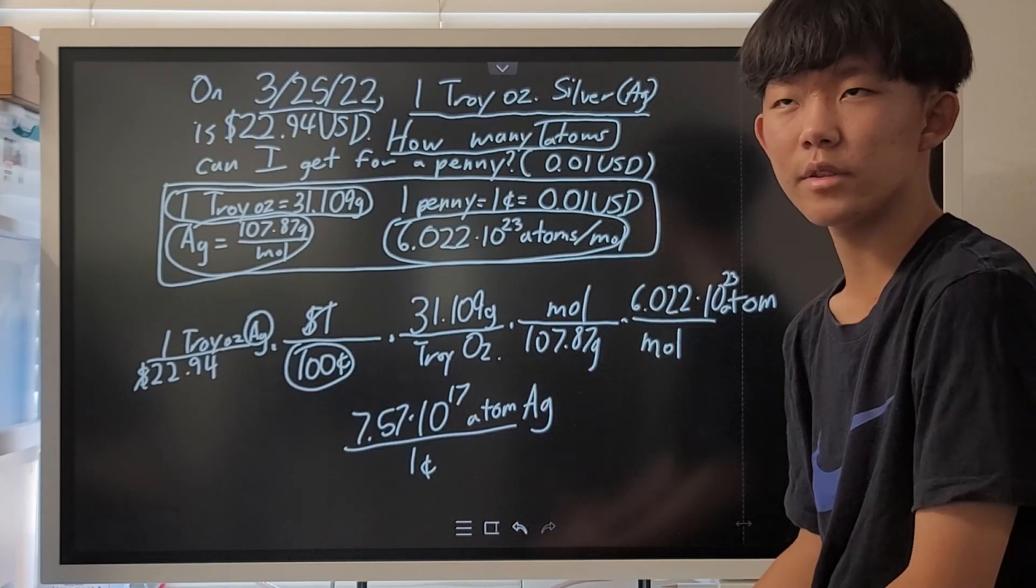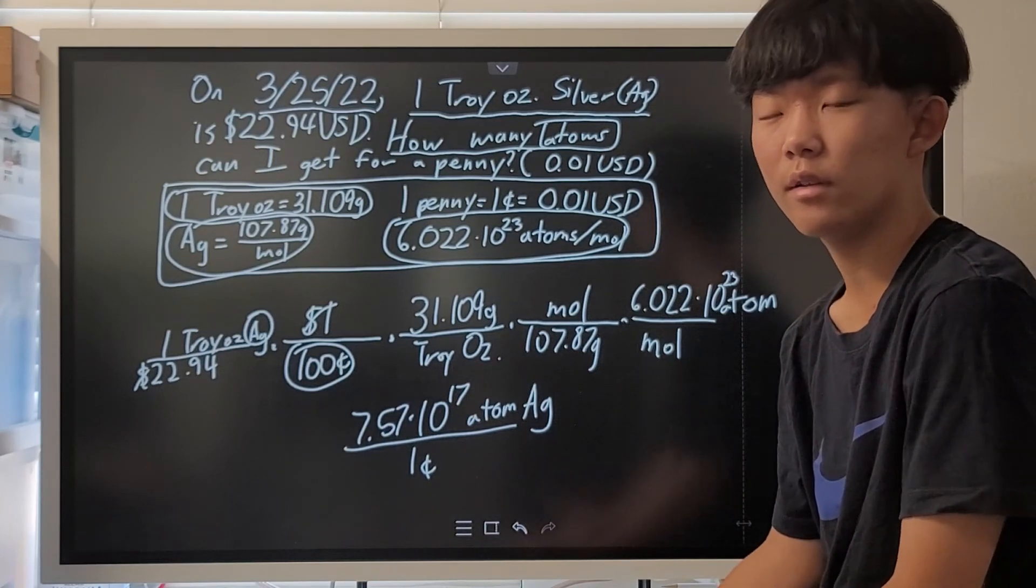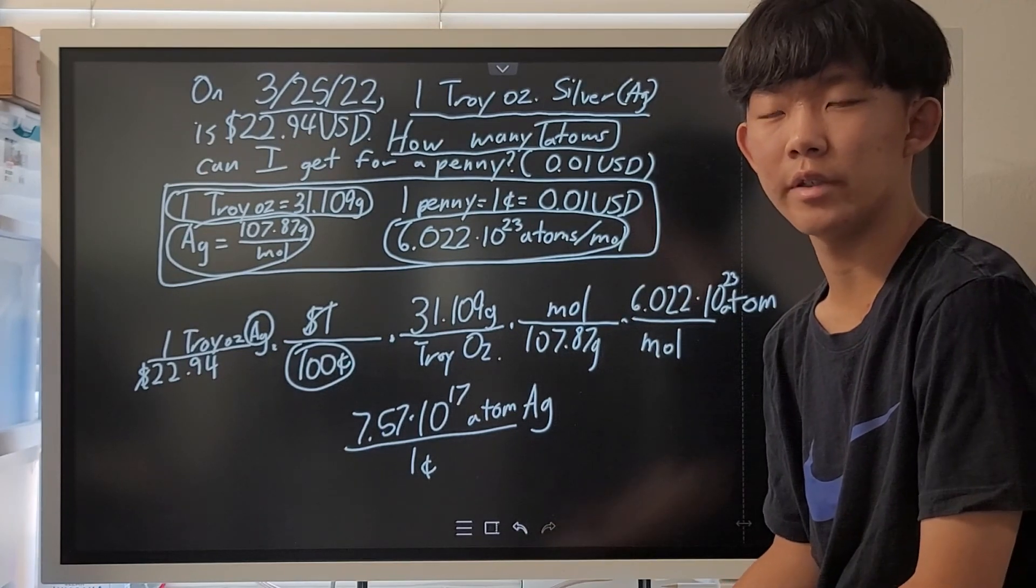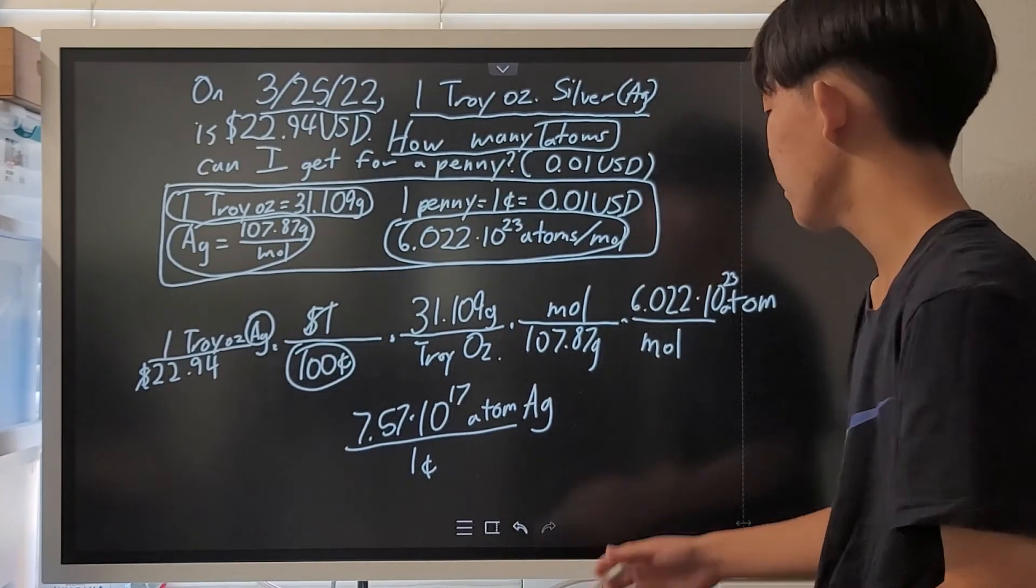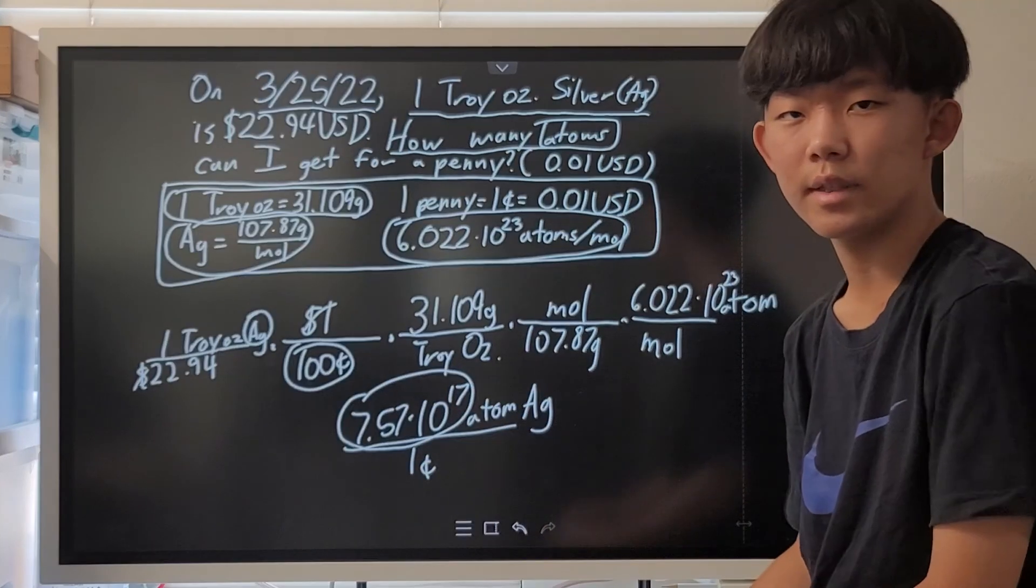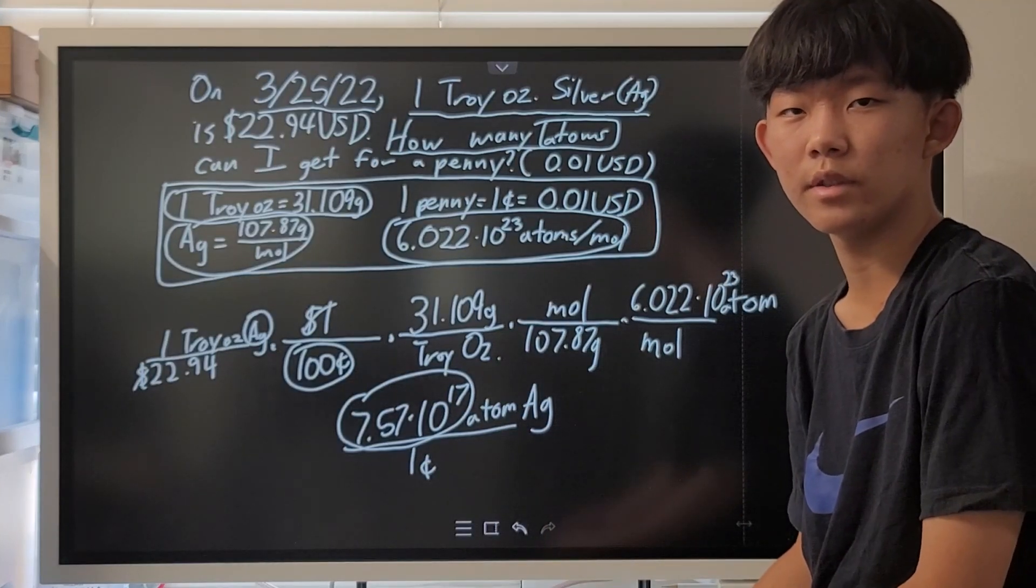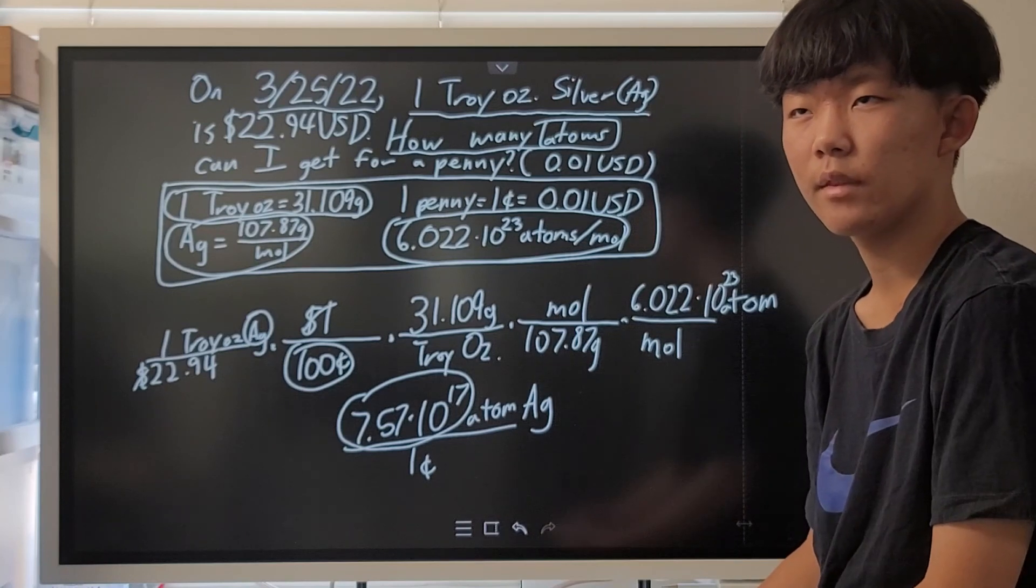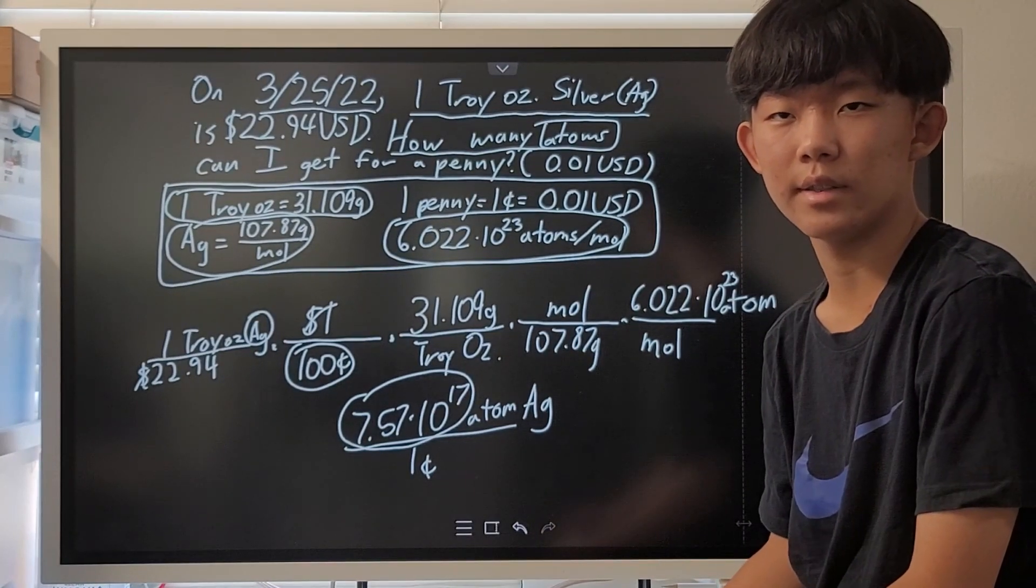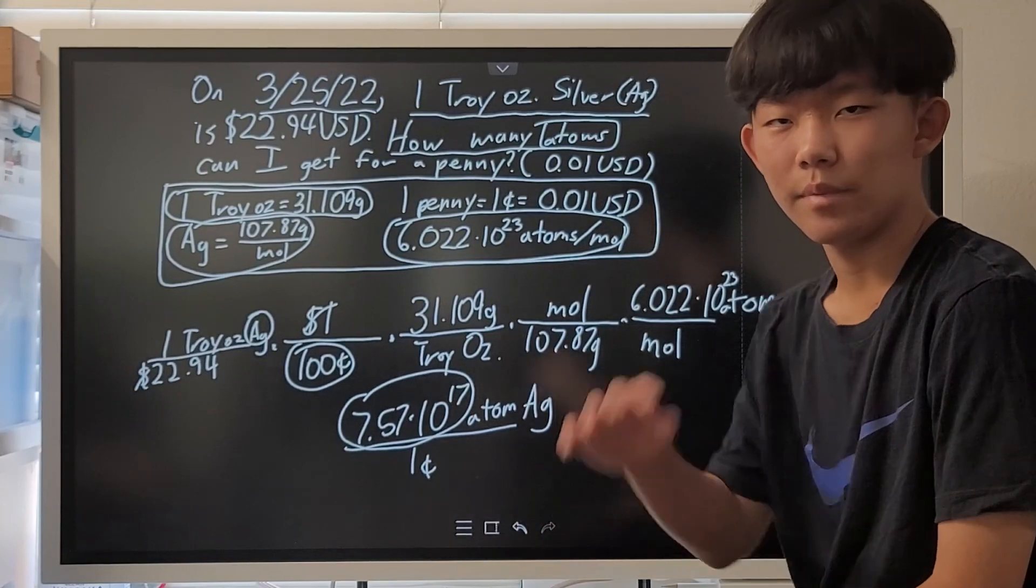Now, we could have just written something really long, like 757 quadrillion atoms of silver. However, that's just going to be too long. So, sometimes we have to resort to using scientific notation, which uses a power of 10. So, that was a quick tutorial on how to do dimensional analysis. Thanks for watching. Bye!